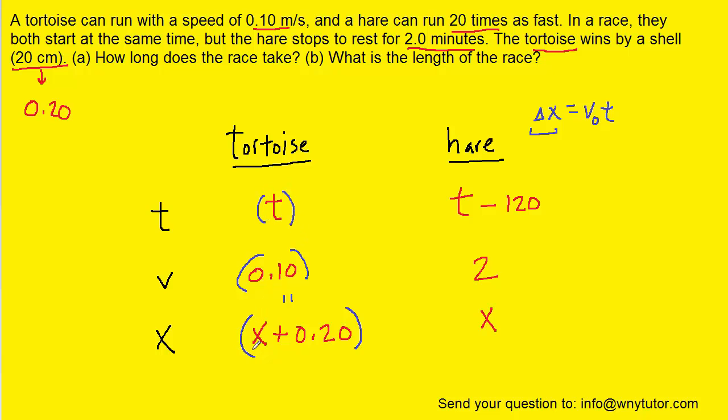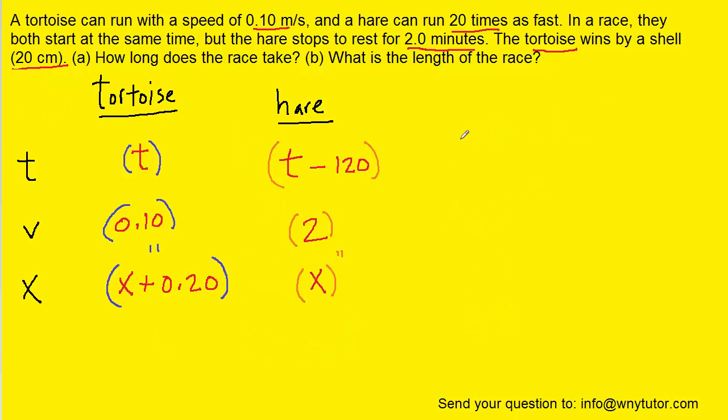And so the terms in parentheses that we just highlighted in blue are going to form one of our equations. The other equation will be similar. We're going to take the distance that the hare travels and set that equal to the speed multiplied by its time. The equations look a little confusing vertically, so let's go ahead and rewrite them horizontally. And we'll come over here and do that.